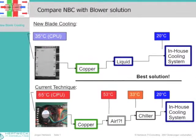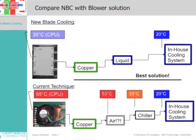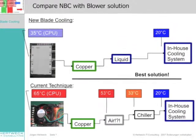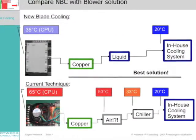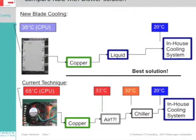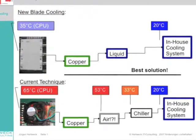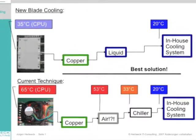The NBC does not transfer the heat via air, which is a big advantage. Therefore, the CPU only heats up to round about 35 degrees Celsius in case the NBC is supplied with water of 20 degrees Celsius.